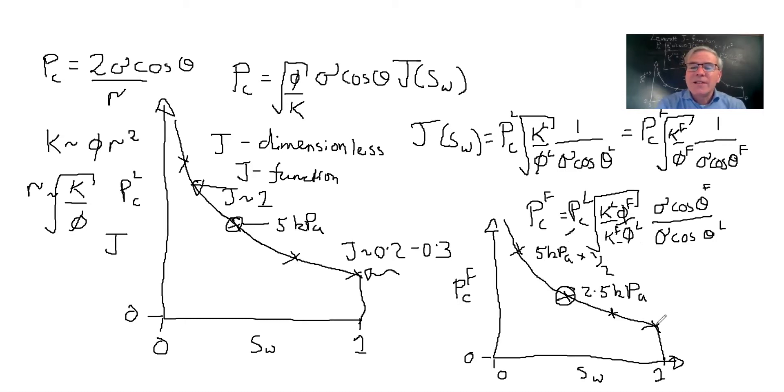So that's a relatively simple introduction to the Leverett J function and how it is used. The other thing to bear in mind is that this capillary pressure in the field for primary drainage gives you an indication of how saturation is distributed in the reservoir above the free water level, which is where the oil and water pressures are the same. The capillary pressure is zero. As I go up, we see less and less water in the rock. We get more and more oil in because the capillary pressure is changing with height.